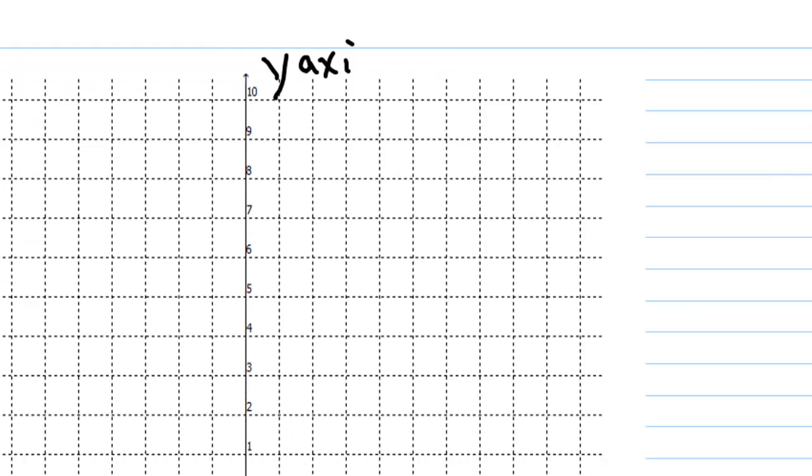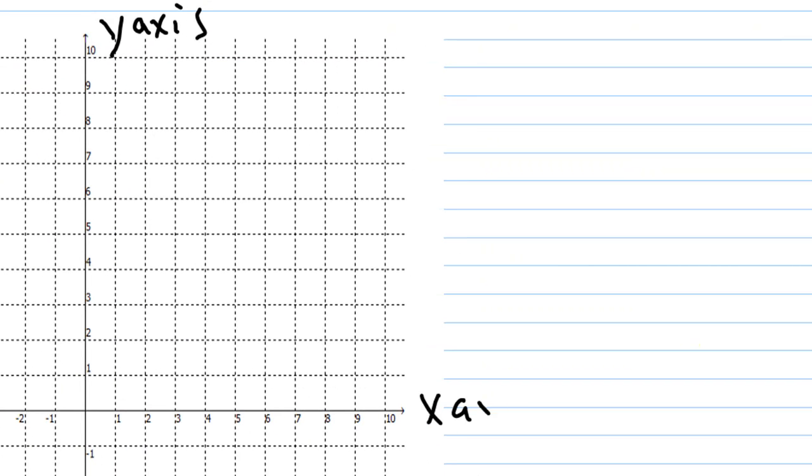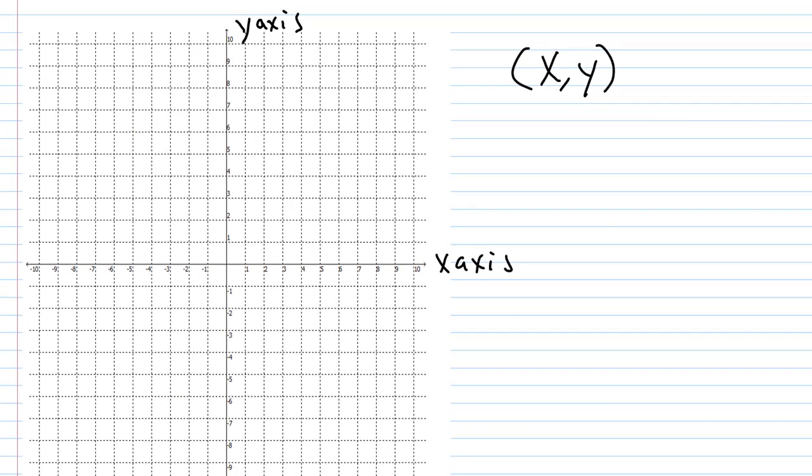This is our y-axis and this is our x-axis, and then we have x comma y. I just keep writing this stuff so that it sinks in—if you see this enough times, you'll remember it. It's one of those things you just need practice. Our points were (0,0), negative 4 comma negative 3, and 8 comma 6.